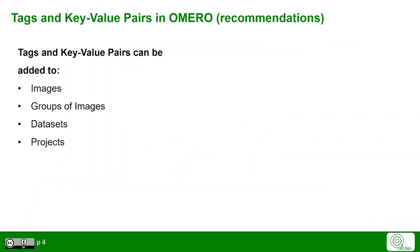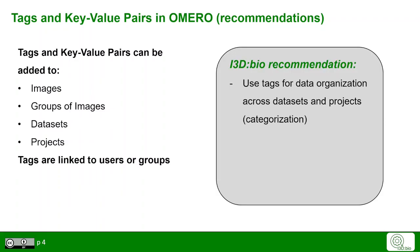We have introduced the concept of tags and key value pairs in Omero. Tags and key value pairs can be added to images, to groups of images, to datasets or to projects. Tags are linked to users and groups. We recommend that you use tags for the data organization across datasets and projects. This allows for example categorization, and it can substitute for deep folder hierarchies that you might be used to from classical file systems.